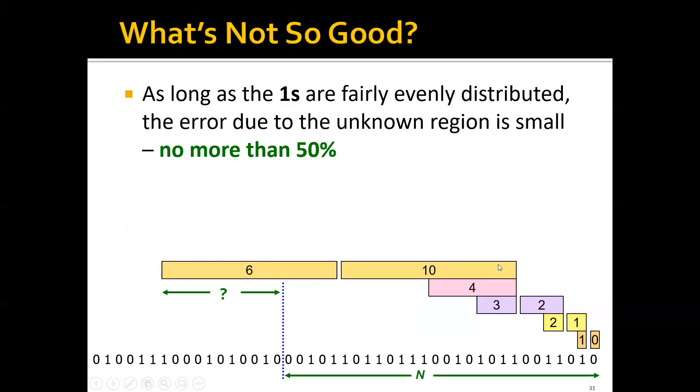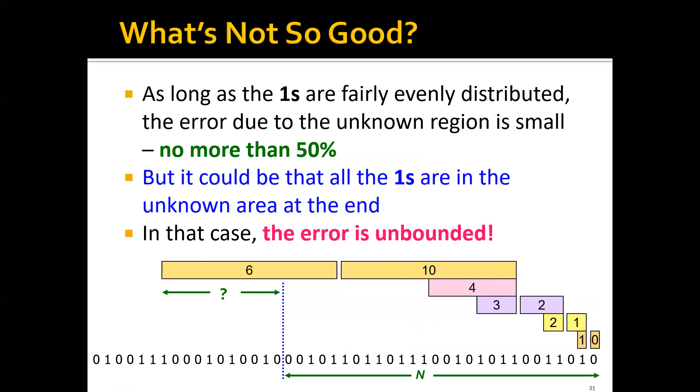But what's not so good about this method is, as long as the ones are fairly evenly distributed, the error due to unknown region is small—no more than 50%. The problem is that it could be that all the ones here in the window are actually in the unknown area at the end. In this case, we can see that the error is unbounded.